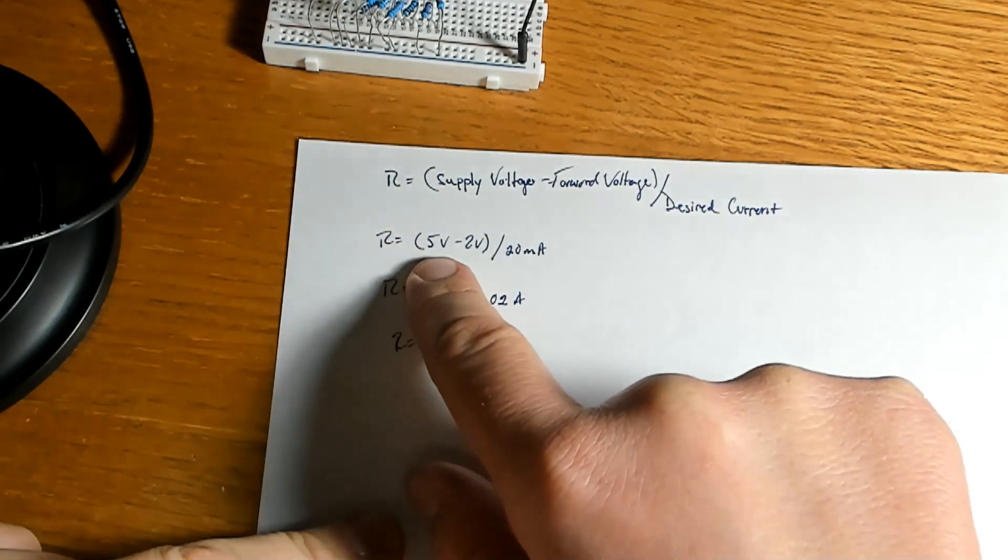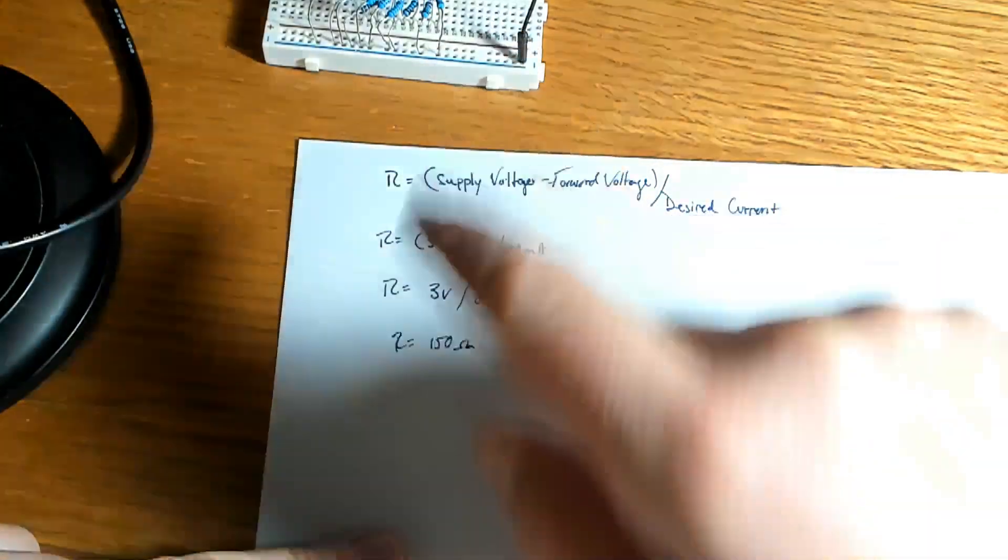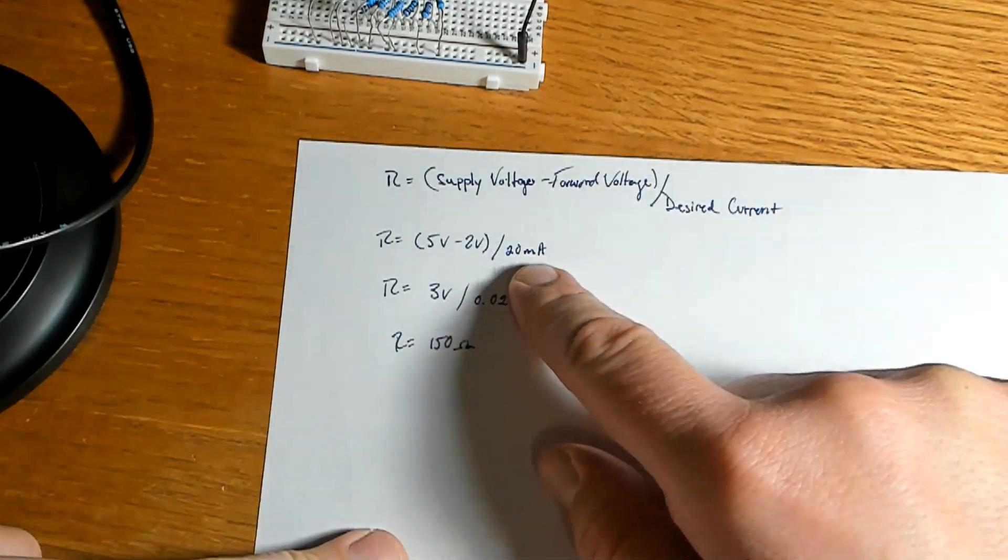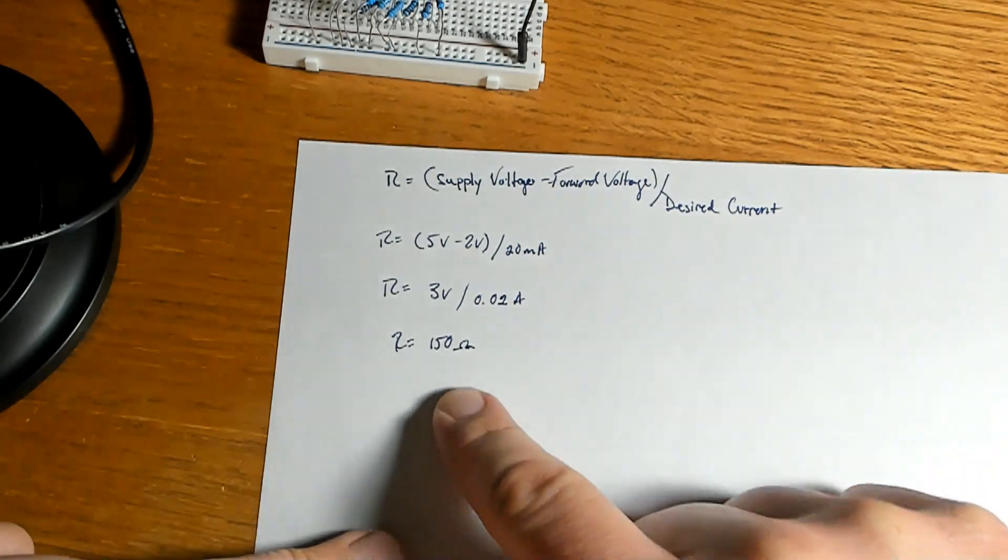R equals 5 volt, which is what we're supplying, minus 2 volt, which is the forward voltage of the LED bar and then divide that by 20 milliamp because that is the forward current. Let's work that out and it's about 150 ohm.